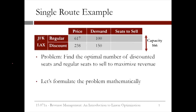For a single route example, our problem is to find the optimal number of discount seats and regular seats to sell to maximize revenue. We'll assume that the price of regular seats is $617 and the price of discount seats is $238. Also, we forecasted the demand of regular seats to be 100 and the demand of discount seats to be 150. The capacity of our airplane is 166 seats.